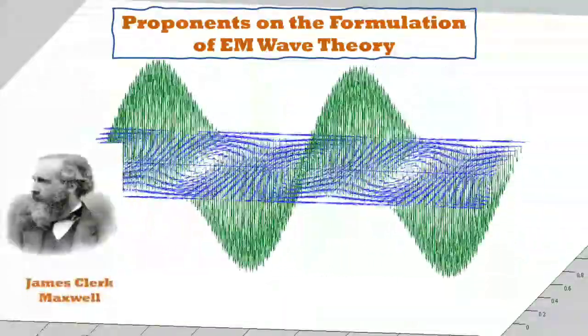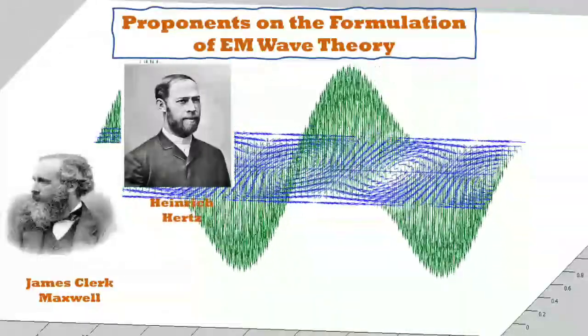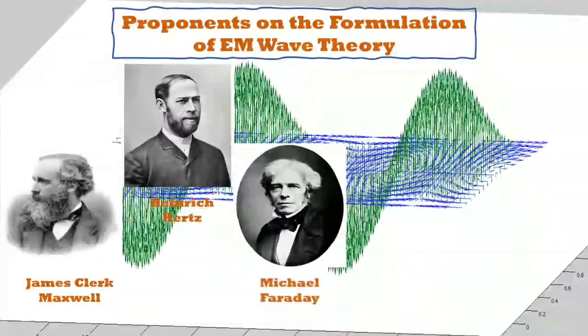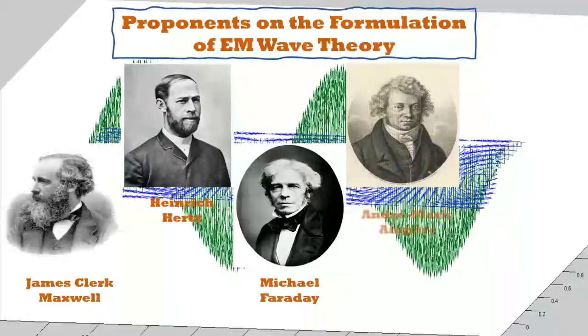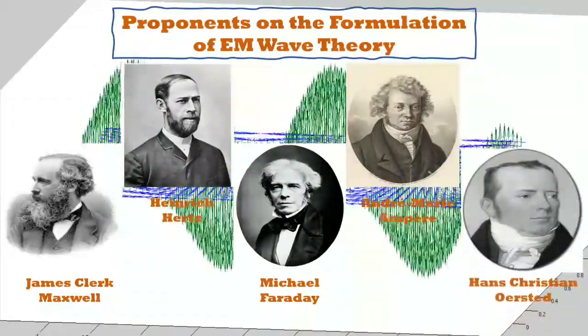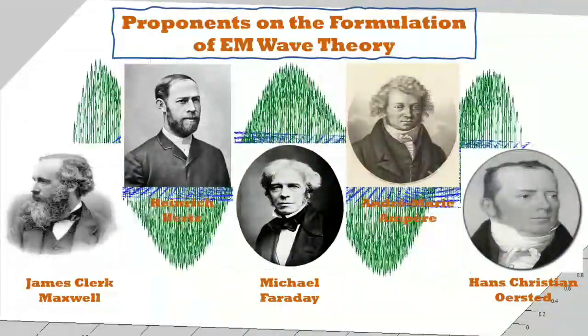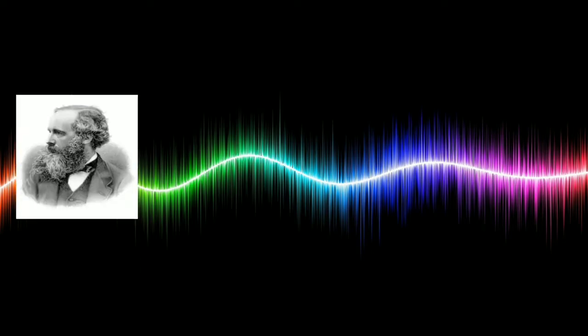We are now in the proponents of the formulation of the electromagnetic wave theory. When we say proponents, they are the advocates or supporters of the said theory. We have James Clerk Maxwell, Heinrich Hertz, Michael Faraday, André Marie Ampère, and Hans Christian Ørsted. Let's first know who is James Clerk Maxwell.